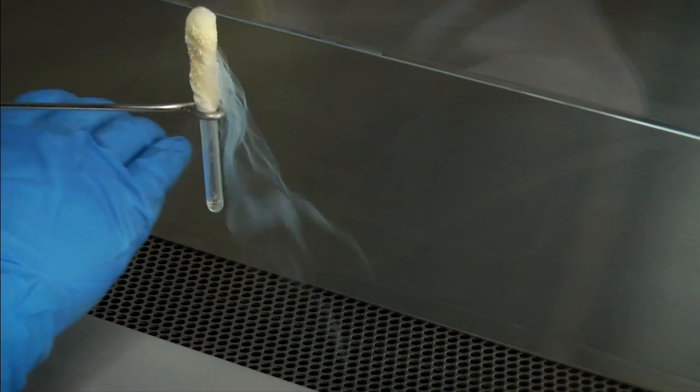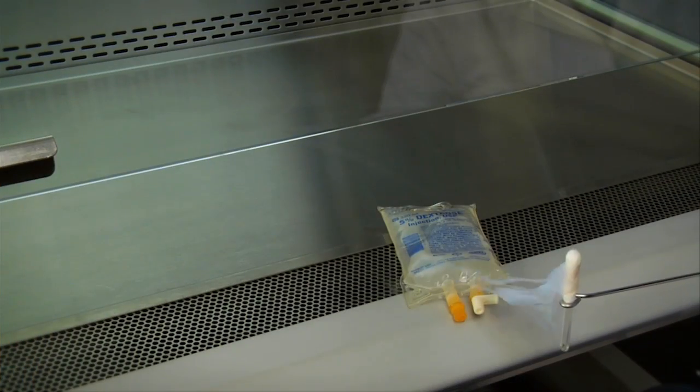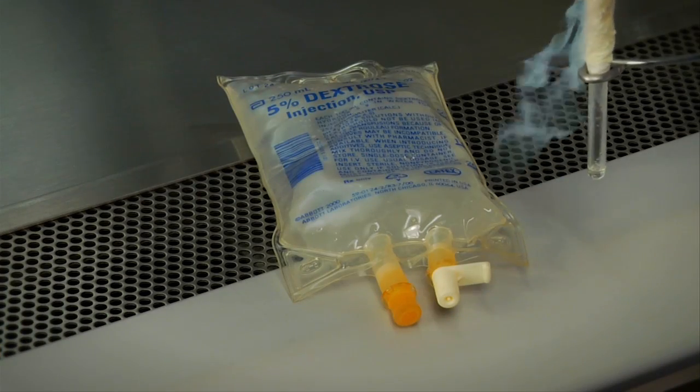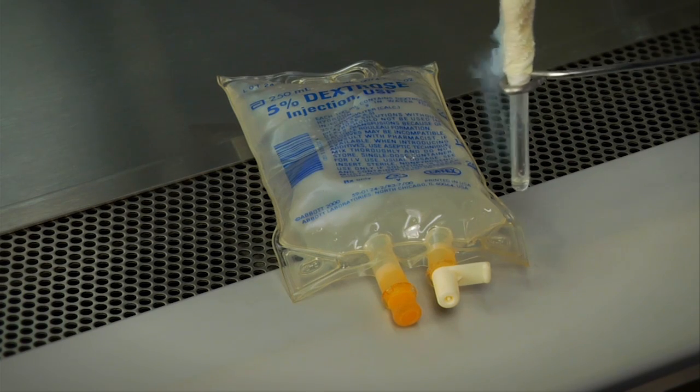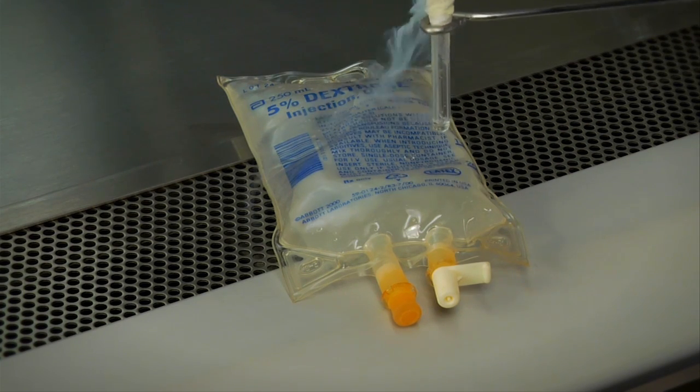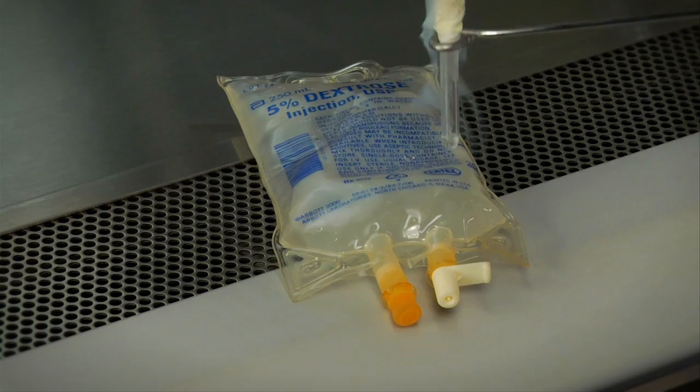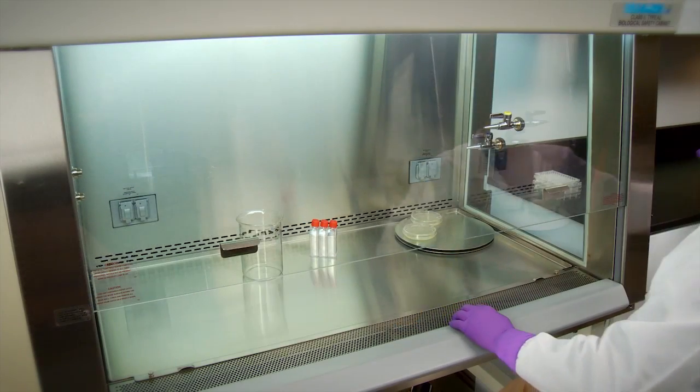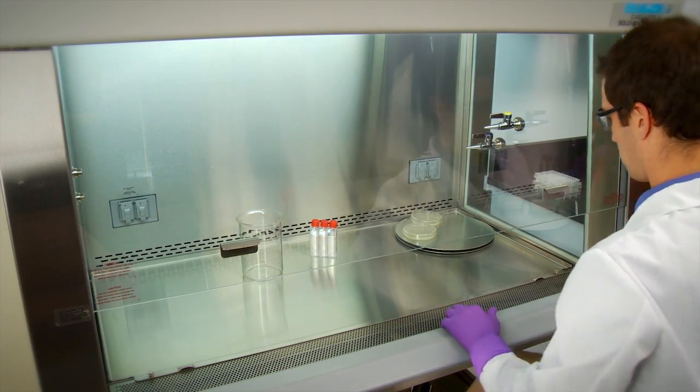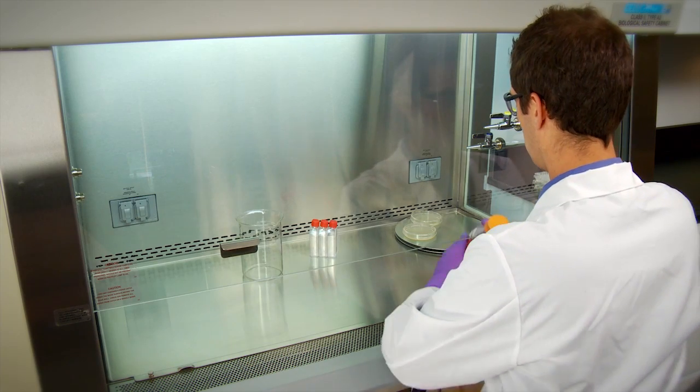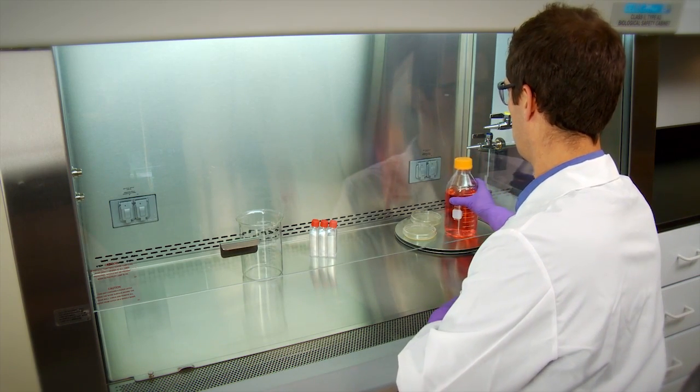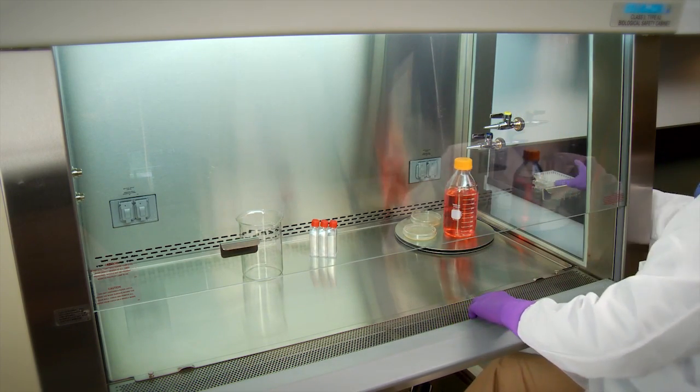Air intake to your BSC is also very important. Remove any items on the intake grills that might block or disrupt the air supply, and be sure the front grill is not blocked, covered, or obstructed. All materials should be placed as far back in the cabinet as possible, toward the rear edge of the work surface and away from the front grill of the cabinet, but still within reach.